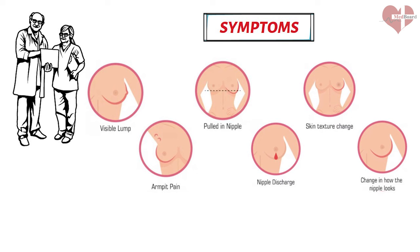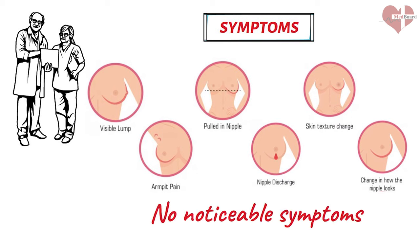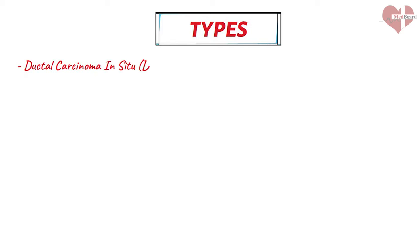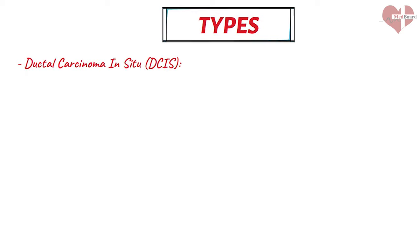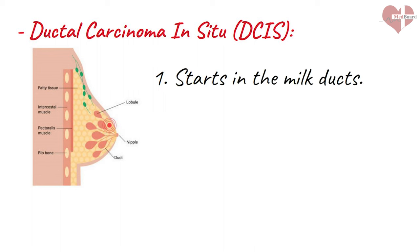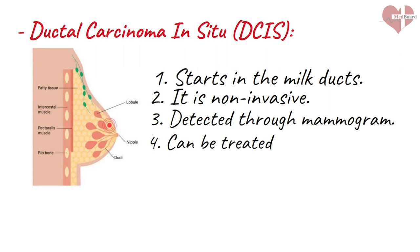Additionally, some cases of breast cancer may not cause any noticeable symptoms, which is why regular breast screenings, such as mammograms, are so important. There are various types of breast cancer. Ductal carcinoma in situ (DCIS) is a type that starts in the milk ducts but has not yet spread into the surrounding breast tissue. It is considered non-invasive because it has not yet spread outside the ducts. DCIS is often detected through a mammogram and can usually be treated successfully.